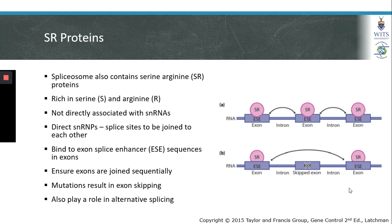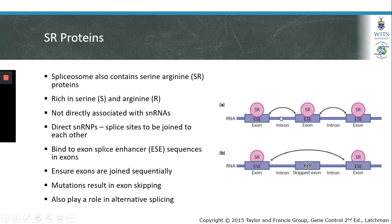In addition to the SNRPs, other proteins in the spliceosome are called SR proteins, named because they are rich in serine and arginine residues. SR proteins are not directly associated with small nuclear RNAs like the SNRPs; however, they direct SNRPs to the splice sites required to be joined. SR proteins bind to exon splice enhancer elements within exons and play a role in directing which exons should bind to each other sequentially, preventing exon skipping during splicing.